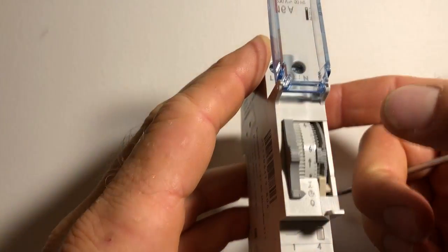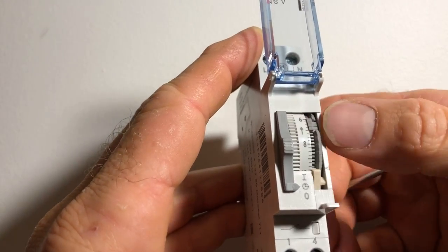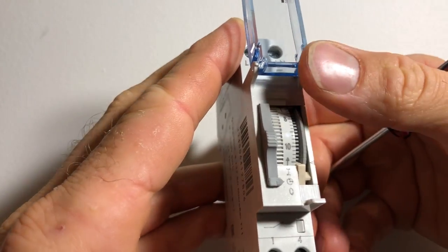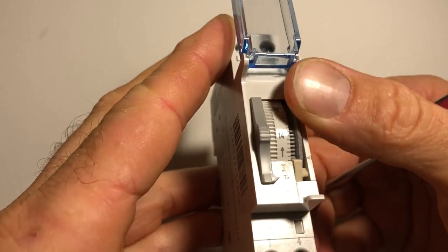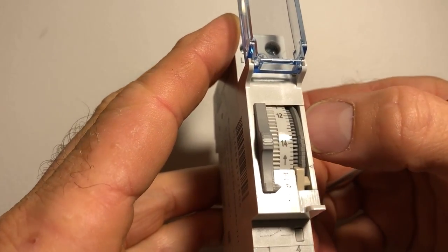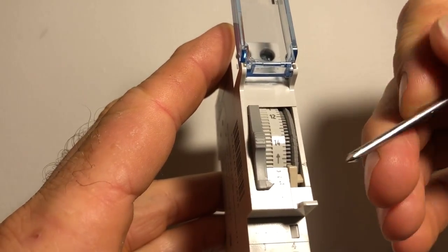Now you can adjust the time by just scrolling this whole wheel here around, you see that's moving there. Let's move around there so we got into the afternoon, so midday there down to two o'clock or fourteen hundred hours.